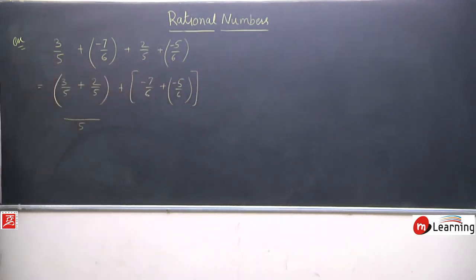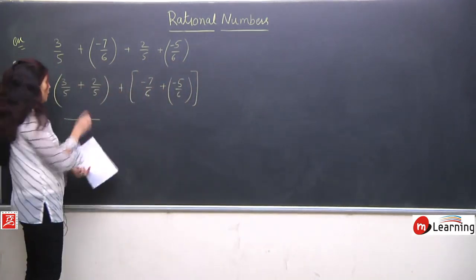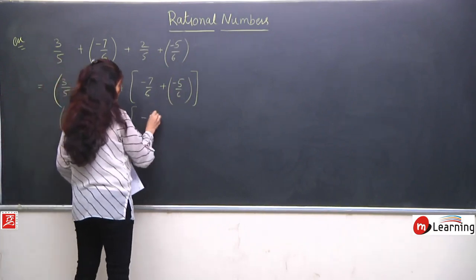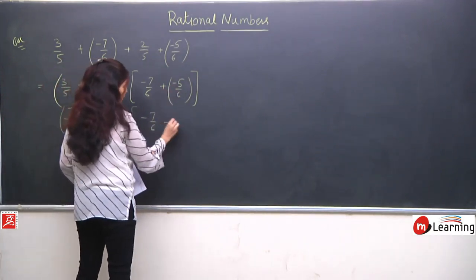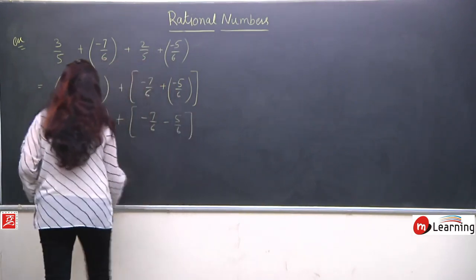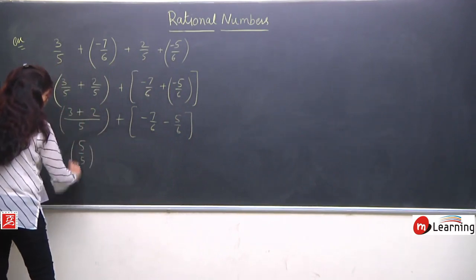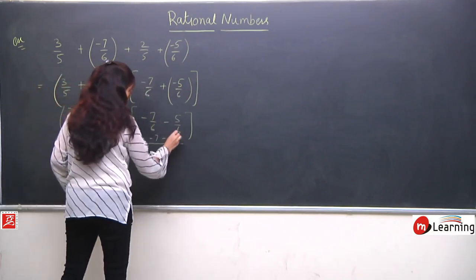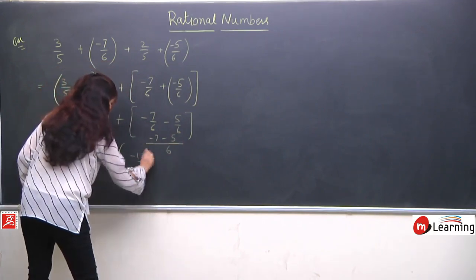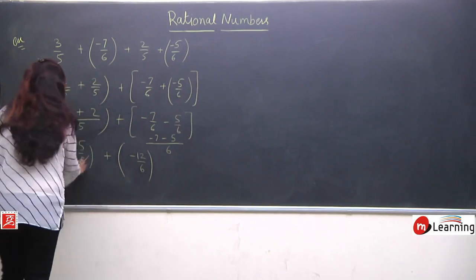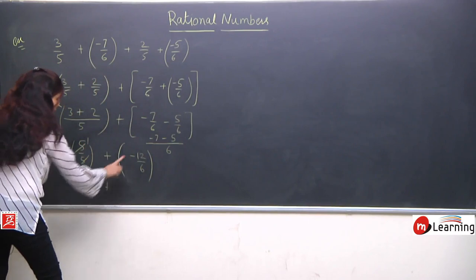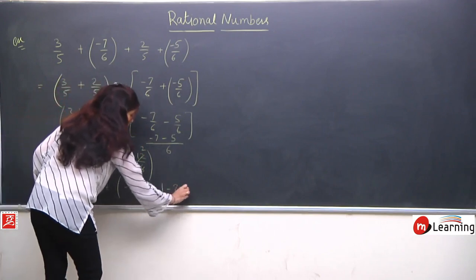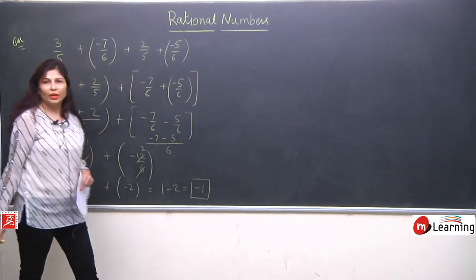Here the denominator is 5, so LCM is 5. We get 3 + 2 = 5 upon 5. For the second bracket: -7/6 + (-5/6), LCM is 6, numerators copy as -7 and -5, giving -12/6. Now 5/5 simplifies to 1, and -12/6 simplifies to -2. So finally, 1 + (-2) = 1 - 2 = -1 is your final answer.